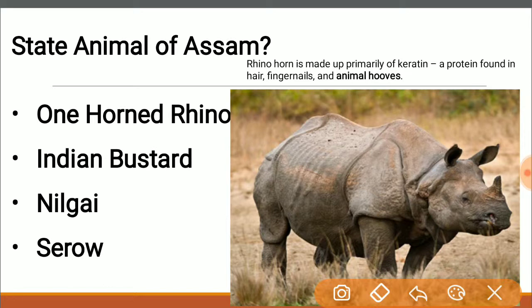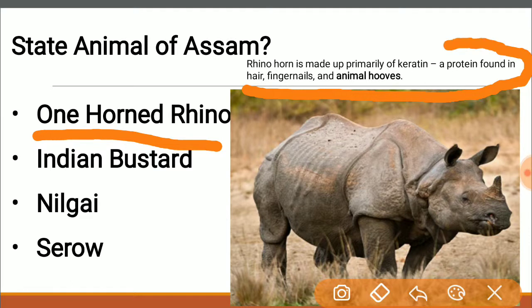The state animal of Assam is the one-horned rhinoceros, found in Kaziranga National Park. A good-to-know fact: the rhino horn is made primarily of a substance called keratin — a form of protein found in hair, fingernails, and animal hooves. It is poached and hunted illegally because it is very valuable in the Chinese medicine market, though nothing is conclusive about its so-called medical uses.